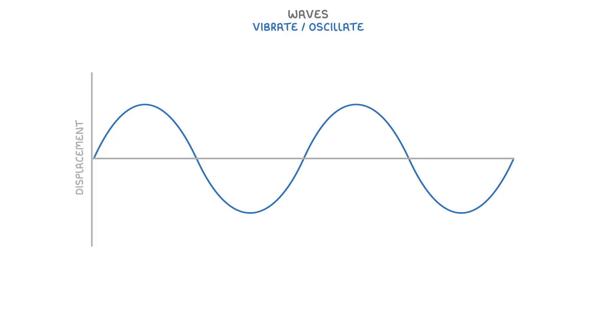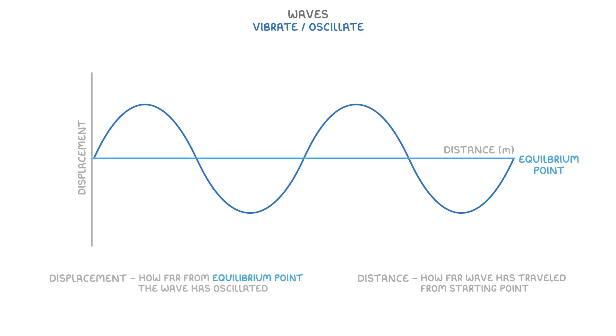To travel from one place to another, the waves vibrate or oscillate, as we can see in this displacement distance graph. The distance is how far the wave has travelled from the starting point, while the displacement is how far from the equilibrium point the wave has oscillated. So how far it's gone up or down.